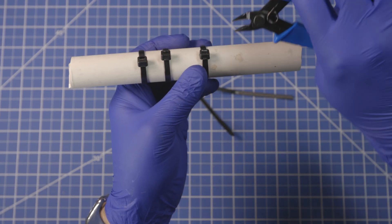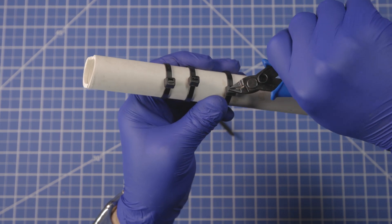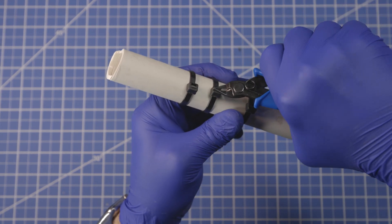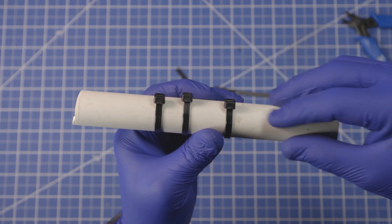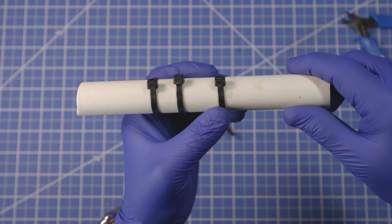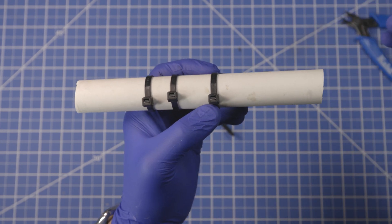The magic of flush cut pliers too is you can come along and fix poorly cut zip ties and make them all beautiful and flat and not going to cut your arms open when you rub against them.